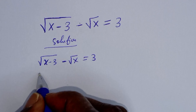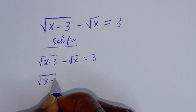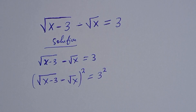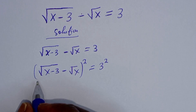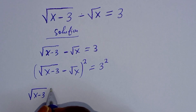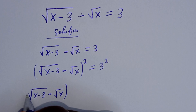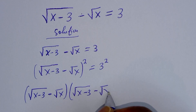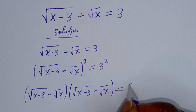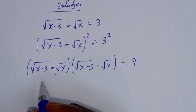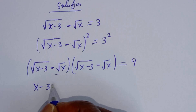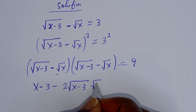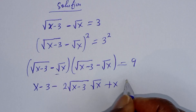Now, let's square both sides of this equation. Square root of x minus 3 minus square root of s, all squared, is equal to 3 squared. Then, this is square root of s minus 3 minus square root of s, multiplied by square root of x minus 3 minus square root of s, is equal to 3 squared, which is 9. This multiplied by this, we have x minus 3 minus 2 square root of x minus 3 times square root of x plus x is equal to 9.